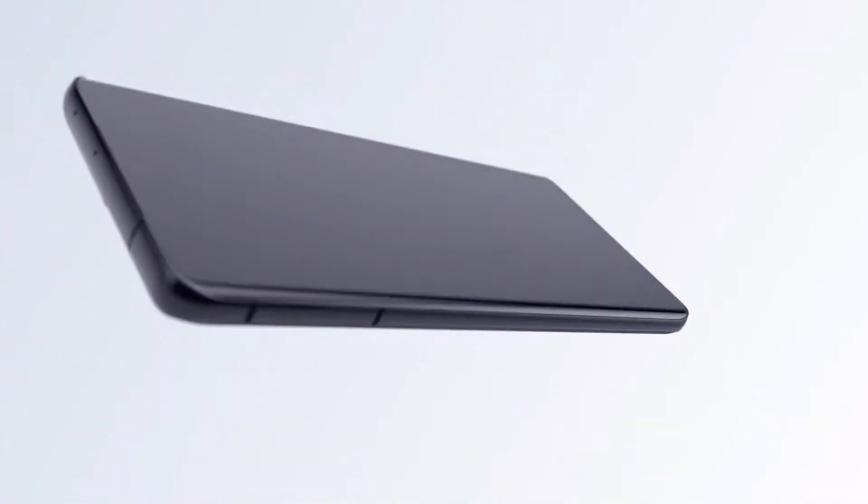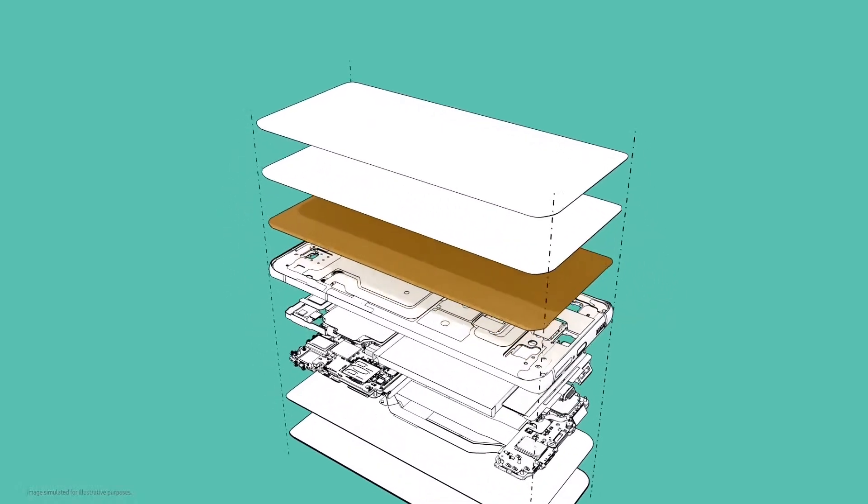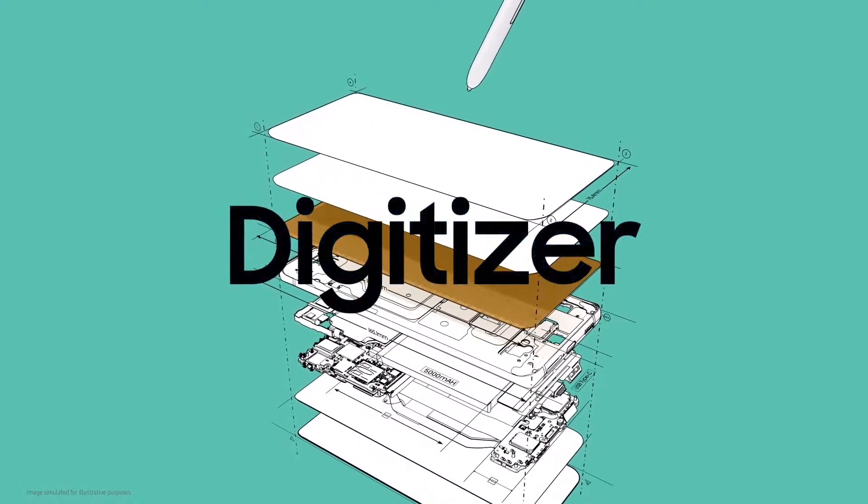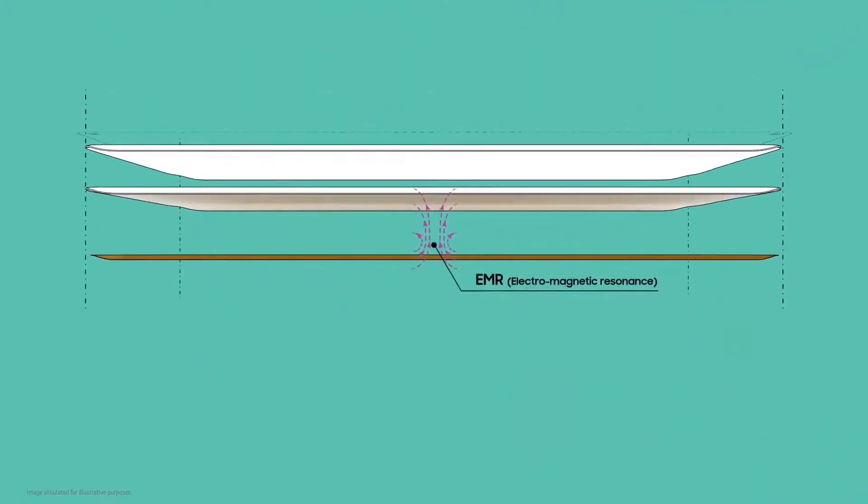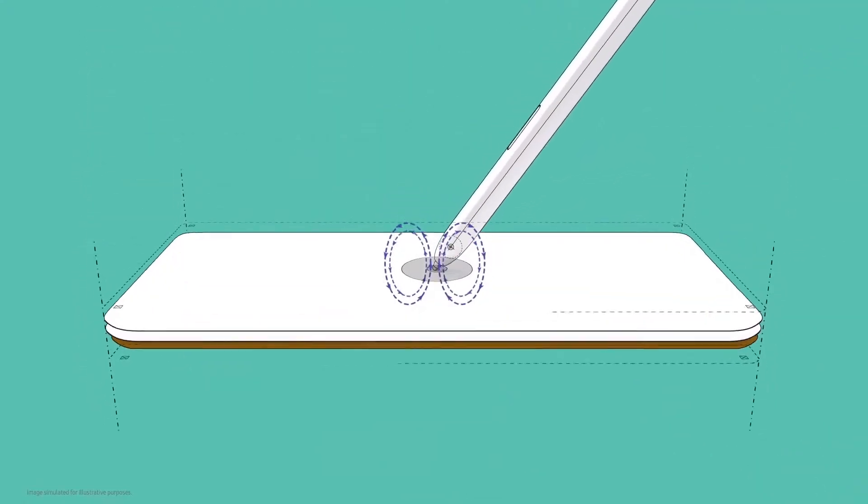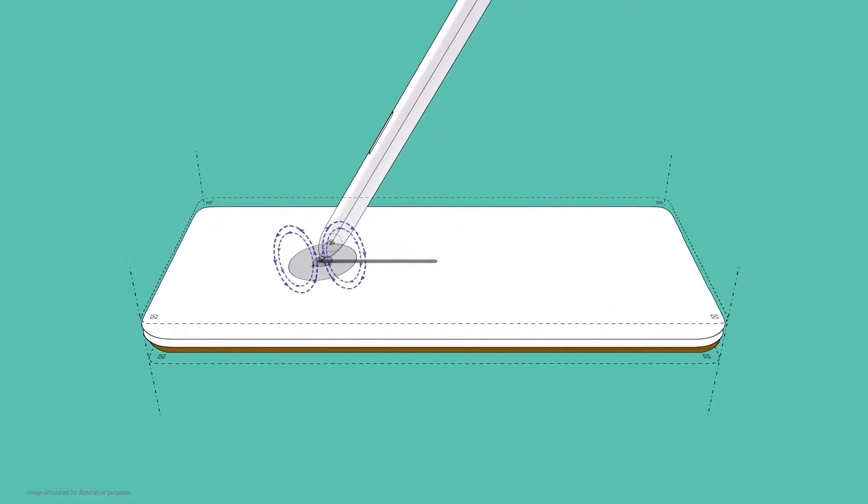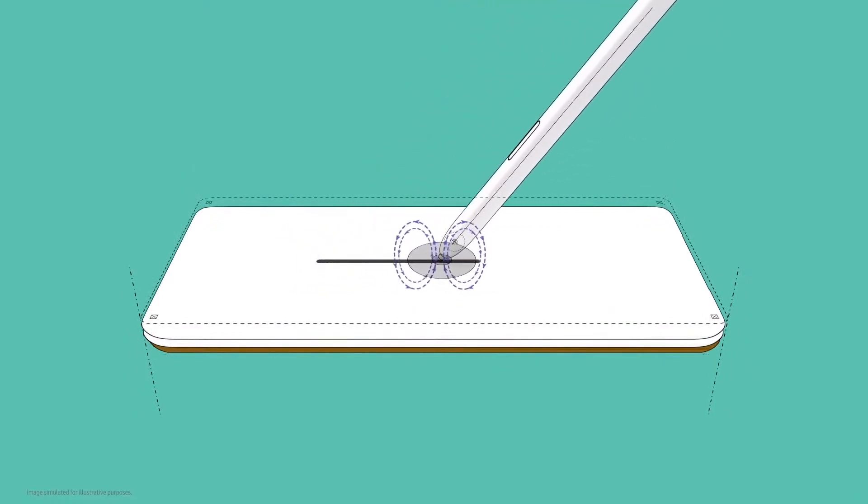The S-Pen experience actually starts with the display. The digitizer inside the display works with the S-Pen to create EMR, or electromagnetic resonance, which detects the coordinates of what you're writing or drawing and shows it on screen.